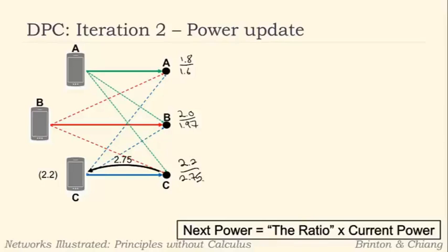So this is interesting because now for A, the ratio is greater than 1, whereas before we had it as less than 1. For B, it's greater than 1, whereas before it was less than 1. And for C, it's less than 1, whereas before it was greater than 1. So they've switched and now we expect A and B's transmit powers to go up because their SIR is too low and C's transmit power to go down because its SIR right now is too high.